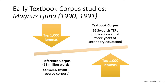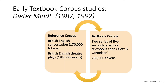Textbooks have long been a cherished object of study, but page-by-page analysis used to be a very laborious process, and it's changed thanks to the major advances in digital data storage and retrieval. The earliest textbook corpora that I'm aware of date back to the late 1980s and early 1990s. Magnus Jung converted the entire content of 56 EFL textbooks used in Sweden to machine-readable text, lemmatised and extracted the most frequent 1,000 lemmas, and then compared those to the most frequent lemmas in the COBUILD corpus. And around the same time, in Germany, Dieter Mint developed an entirely corpus-driven grammar of future time expressions and later modal verbs.